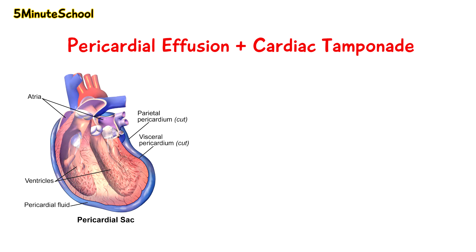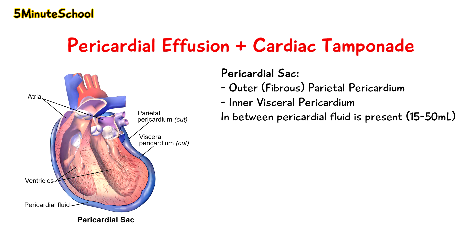The pericardial cavity is a two-part membrane which surrounds the heart. It has an outer fibrous connective membrane called the parietal pericardium and an inner two-layered serous membrane called the visceral pericardium.